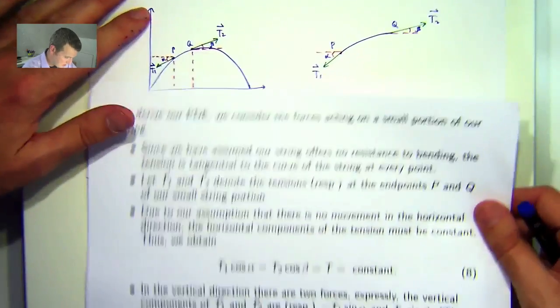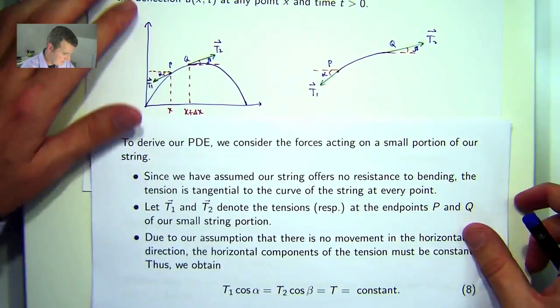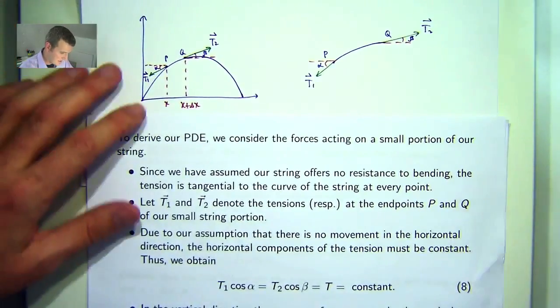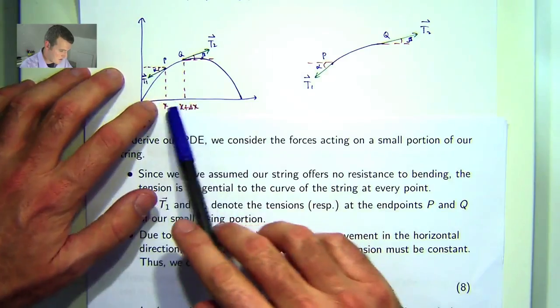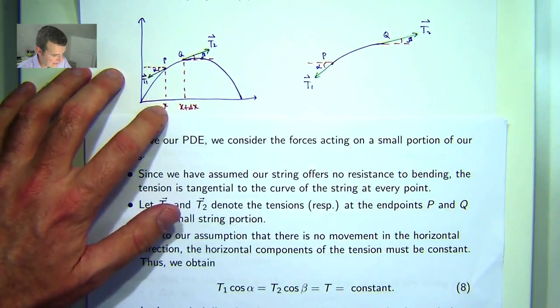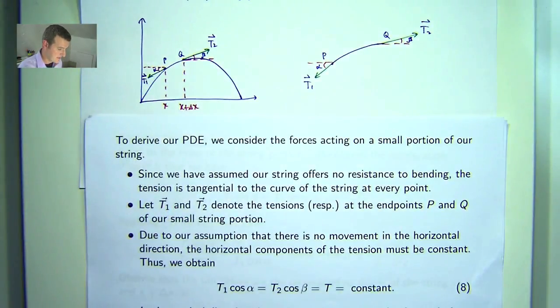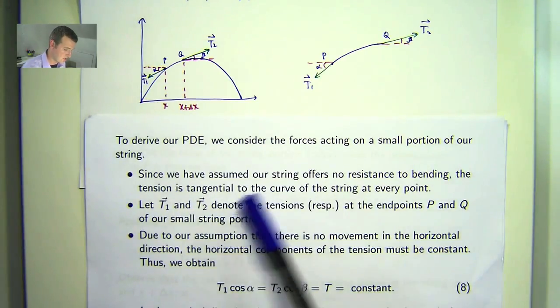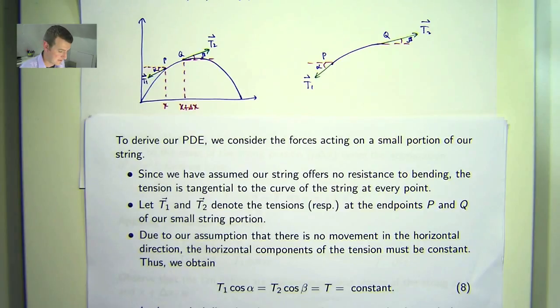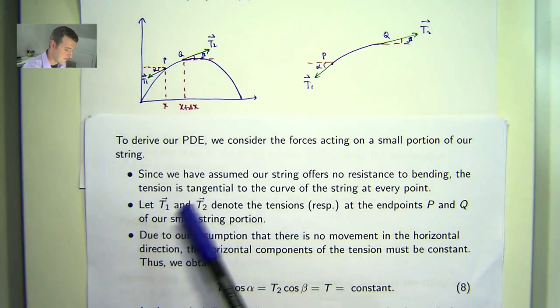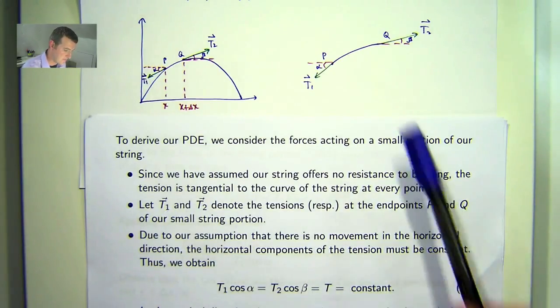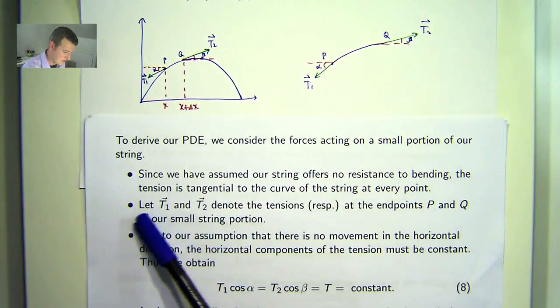To actually derive our PDE, let's consider a small section of our string lying above x to x plus delta x. Since we've assumed that our string offers no resistance to bending, the tension is tangential to the curve of the string at every point. Let T1 and T2 denote the tensions at the end points p and q of our small string portion. These are tangential at the end points.